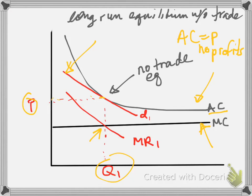Suppose the demand curve weren't tangent to the average cost curve but instead were cutting through it. Then the firm would be able to produce at places where price was above average cost, making profits, and more firms would enter — so that can't be an equilibrium. The only possibility for equilibrium is when average cost equals price, there are no profits, and marginal cost equals marginal revenue.